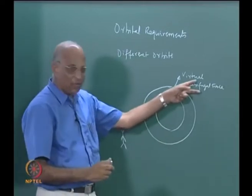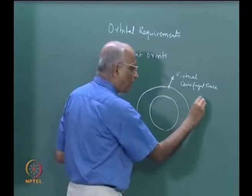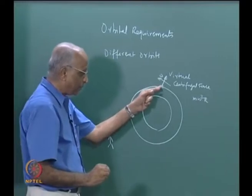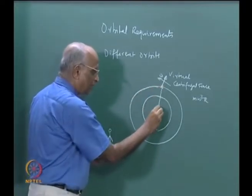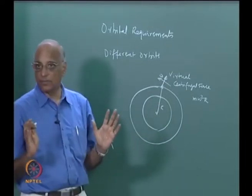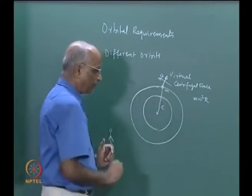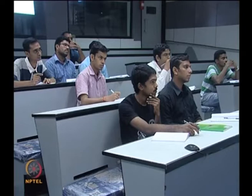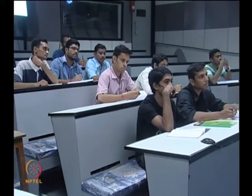We told ourselves that this centrifugal force is equal to m omega squared into r, where omega is the rotational velocity of the body as I am sitting on it and r is the radius from the center. The mass of this object is m. This force was required to correctly predict the motion of the body in the frame of reference of the body itself.